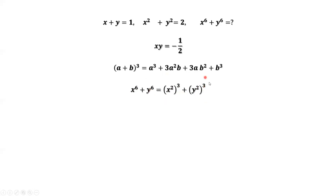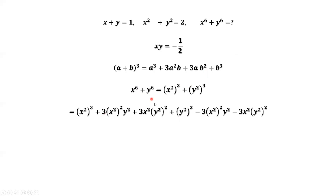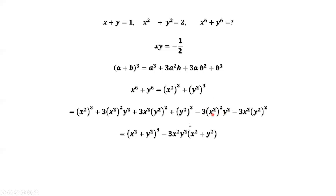In order to apply the formula, we only have the first term and the last term — we do not have the middle two terms. Therefore, we can add the two middle terms and subtract the two middle terms to keep the equation balanced. The first part is a plus b to the power of 3, which is x squared plus y squared to the power of 3. The last two terms share the common factor x squared times y squared.